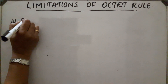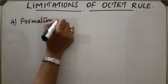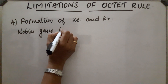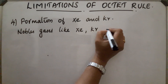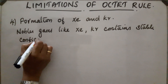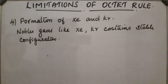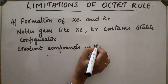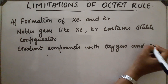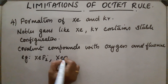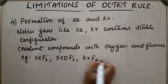The fourth exception is the formation of compounds by noble gases such as xenon and krypton. These noble gases normally have a stable electronic configuration with eight electrons in their outermost shell and are monoatomic. However, they can form covalent compounds with oxygen and fluorine. Examples include XeF2, XeOF2, KrF2, and so on.